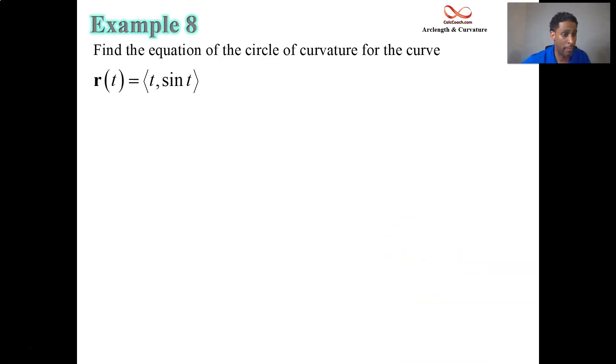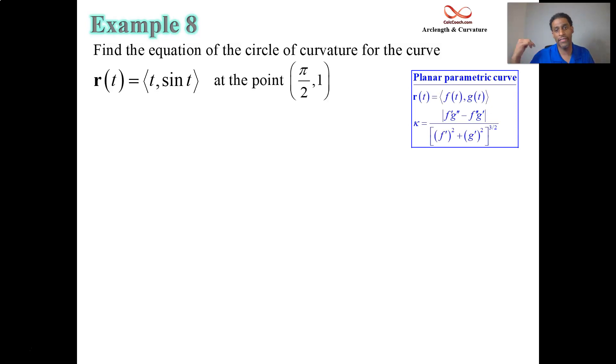So here's a 2D curve parametrically described as t for the x and y equals sine of that t. I'm interested in the point when x is equal to π over 2 and y is equal to 1. So when you have a parametric curve, you can calculate curvature using the formula that was derived in the previous video. It's just taking the 2D and adding a third component to it so you can perform the cross product, the third component being 0 in the k. And so if f is equal to t and g is equal to sine of t,